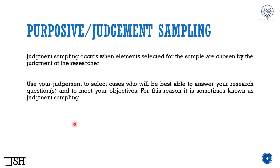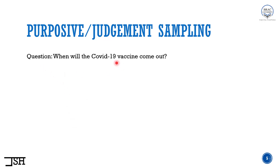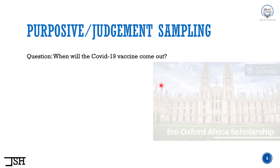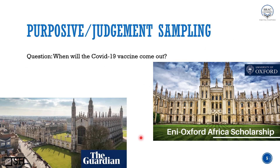In this sampling method, the researcher uses their own judgment that this person or case will be able to answer my research question the best. My research purpose will be fulfilled because that person will give a very thorough answer on the topic. Let me give you a practical example. Suppose the research question is: when will the COVID-19 vaccine come out? To get a thorough answer, who might be the best person to give a well-educated response? My judgment says I will go to famous health professionals or researchers — scientists from Oxford, Cambridge, or famous professionals in Bangladesh. They will provide the best possible answer, so based on my judgment, I will select people from these groups as my cases.